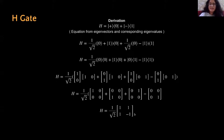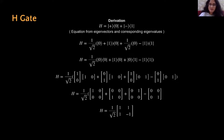The H gate essentially transforms anything in the Z direction to the X direction. By default, measurements are done in the Z axis, meaning a qubit collapses into ket0 or ket1, which are the positive and negative directions of the Z axis. When we transform states into X axis terms using the Hadamard gate, applying H on any arbitrary qubit and then measuring gives either ket plus or ket minus, the positive and negative directions of the X axis.